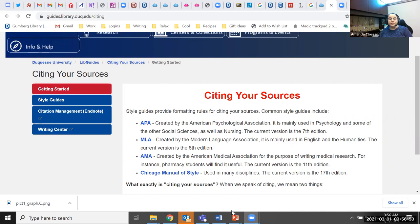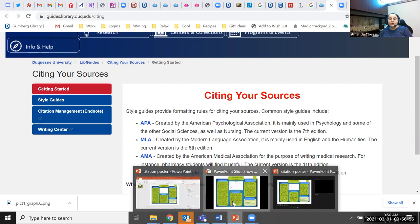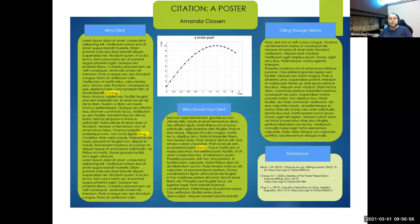Where you put your citations is up to you, but I would recommend the bottom right-hand corner. When people go through your poster, this is the last place their eyes will land. The font can be smaller than the rest of your poster, but it shouldn't be so small as to be illegible. In-text citations should also be included after every sentence that contains the work of others. You can either use superscript numbers or the author's last name to list your in-text citations. In-text citations should also be used for charts, graphs, and pictures that don't belong to you.